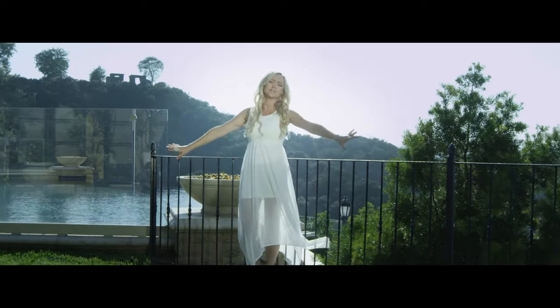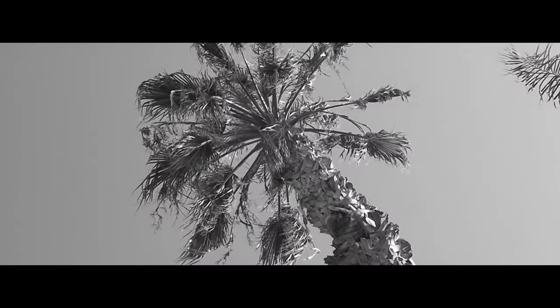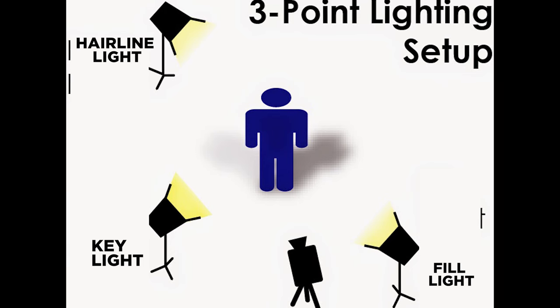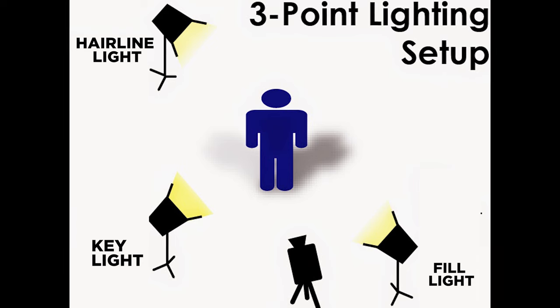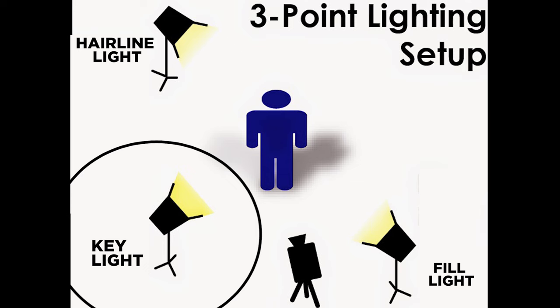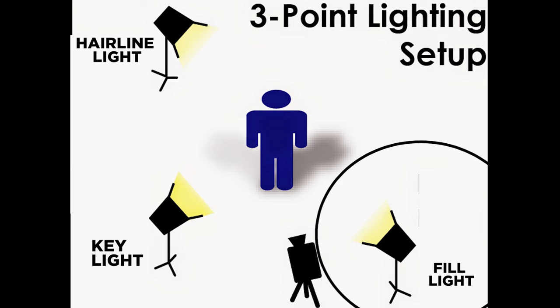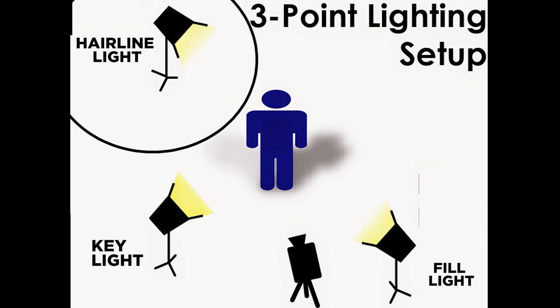Now we're going to go over five rules. These are not the only rules regarding light, but they're the ones we'll cover for now. The first rule is three-point lighting, which is used to light up a subject. It involves three lights — two in the front and one in the back. The front key light is at an angle and is the brightest. The fill light is less bright and fills in the shadow created by the key light. The back light is called a hair light, which creates an outline that pops the subject from the background.